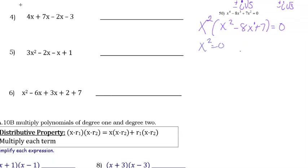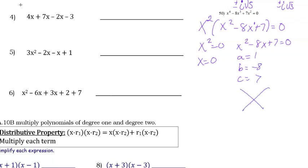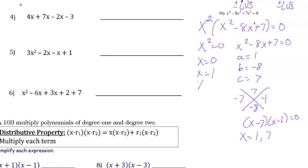We set each factor equal to zero separately. For x² = 0, x = 0. For x² − 8x + 7 = 0, with a = 1, b = −8, c = 7, we need two numbers that multiply to 7 and add to −8: those are −7 and −1. So we get (x − 7)(x − 1) = 0, giving x = 7 and x = 1. The three answers are x = 0, 1, and 7.